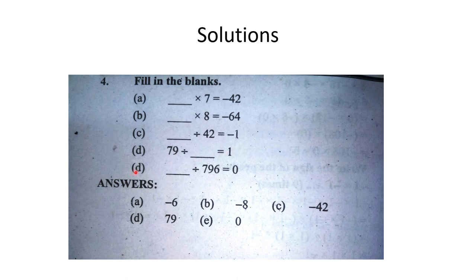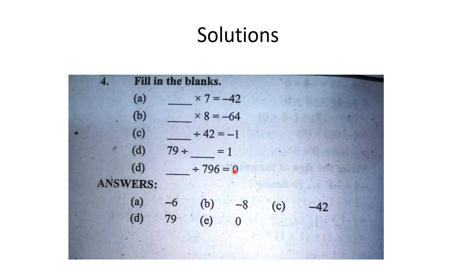Uske baad last part: 796 hai. Lekin aapne kisi aise number ko is par divide karna hai ke answer 0 aaye. So write 0 here — 0 divided by 796. 0 to any number divided, answer is 0. This is how you complete the question.